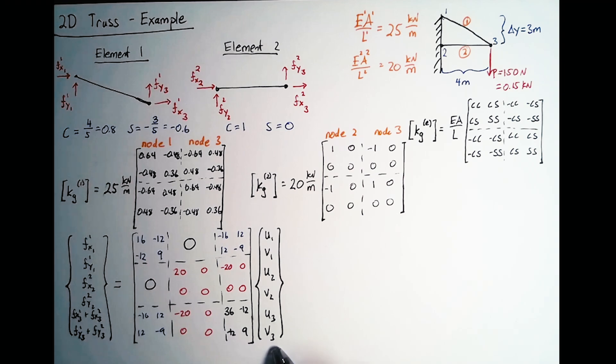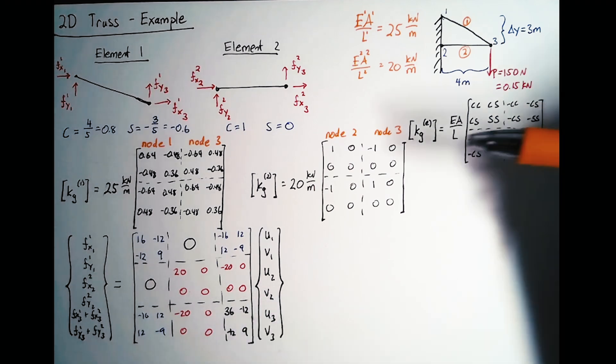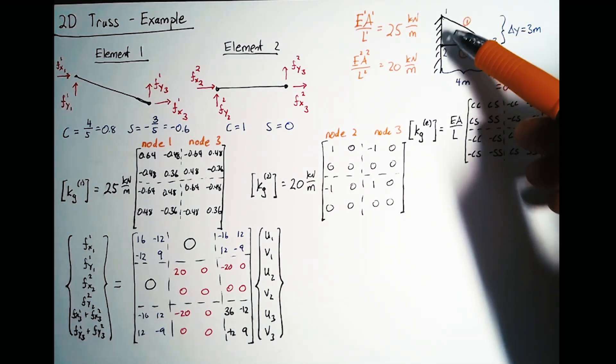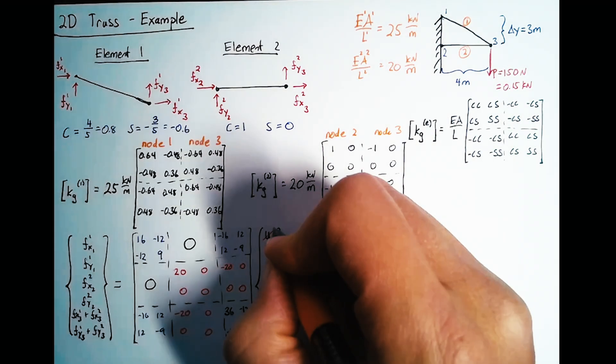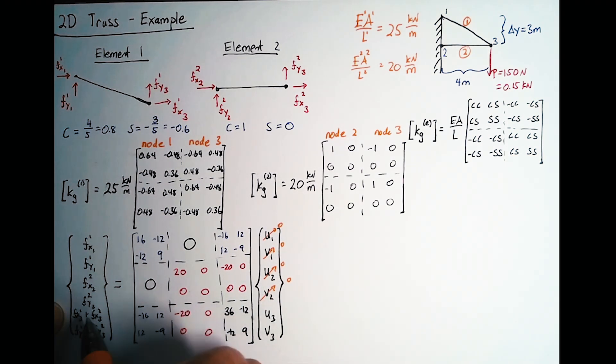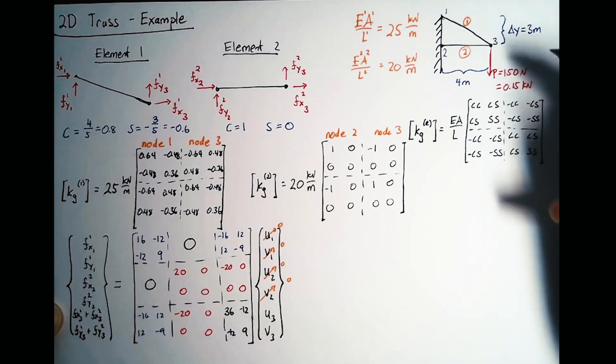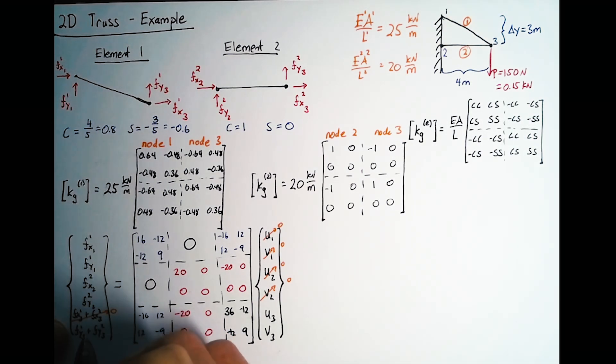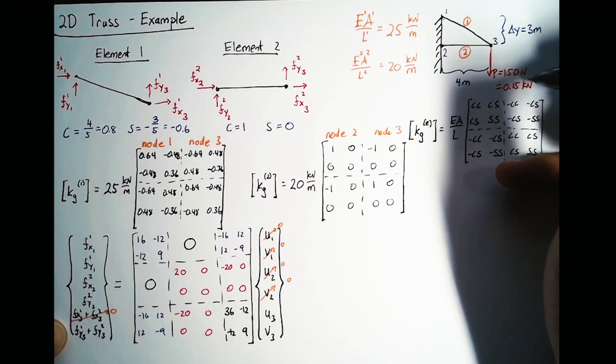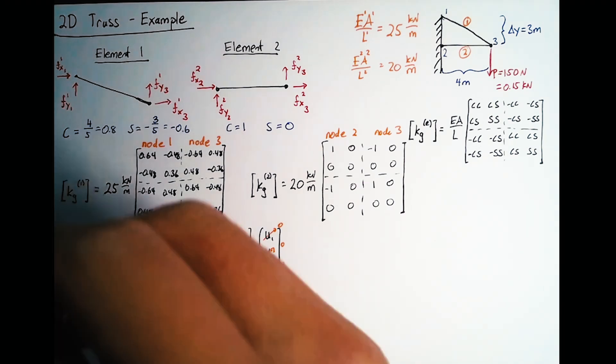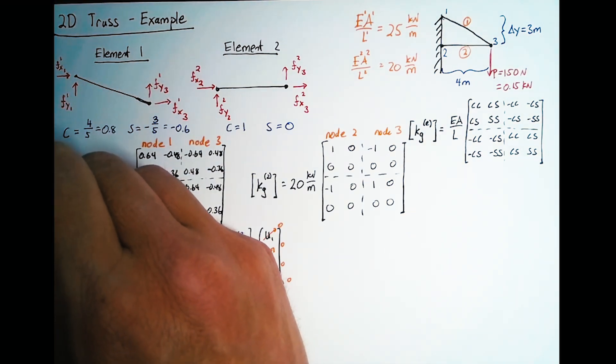This is the system of equations we're trying to solve. Next we apply our boundary conditions. The displacement at node 1 and node 2 is going to be 0 in both x and y because those are attached firmly to the wall. U1, V1, U2, and V2 all go to 0. The sum of forces on node 3 in the x direction equals 0 because we have no external forces there. In the y direction, we know it equals negative 0.15. These four forces are the reaction forces on the wall.